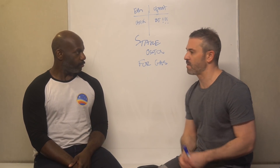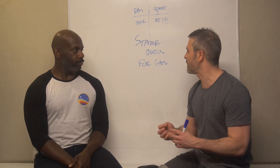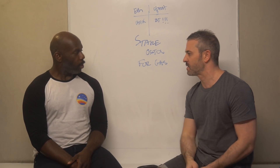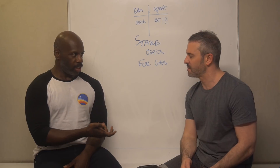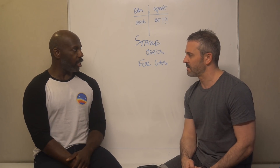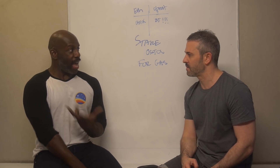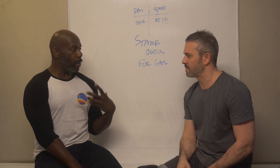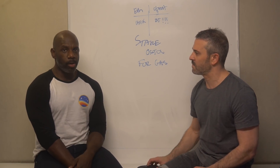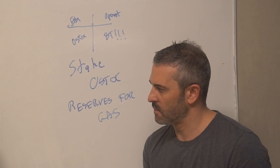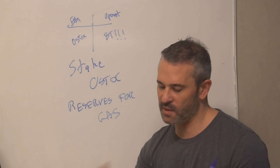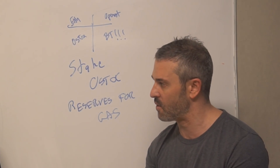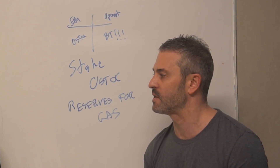Not only do we need to stake OST for minting the tokens, we also need to stake some OST in order to have reserves for gas. In Ethereum blockchain implementations, including our utility blockchain, every transaction and every operation has a gas value assigned to it. In order to cover the cost of those operations, users need to be able to pay for that gas — that's why we need to stake OST alpha for gas.